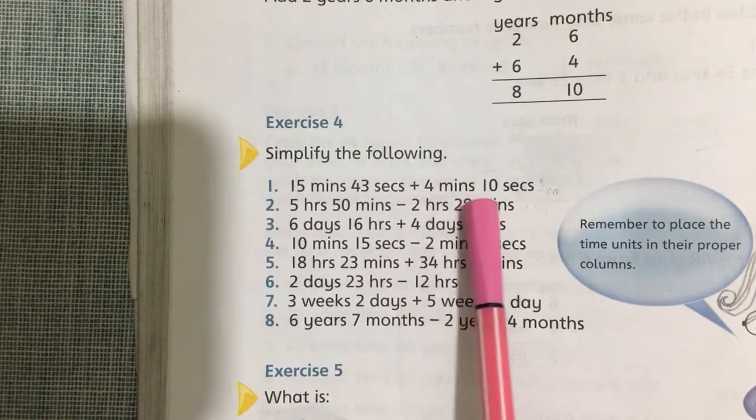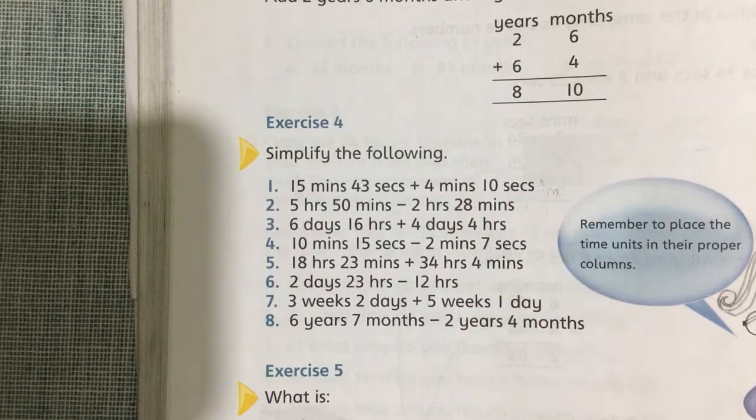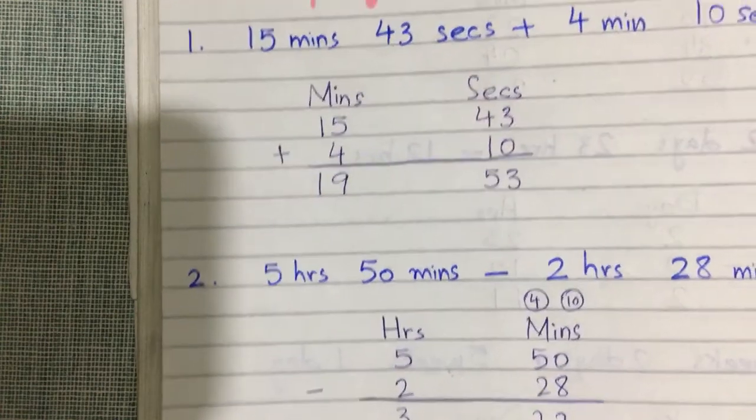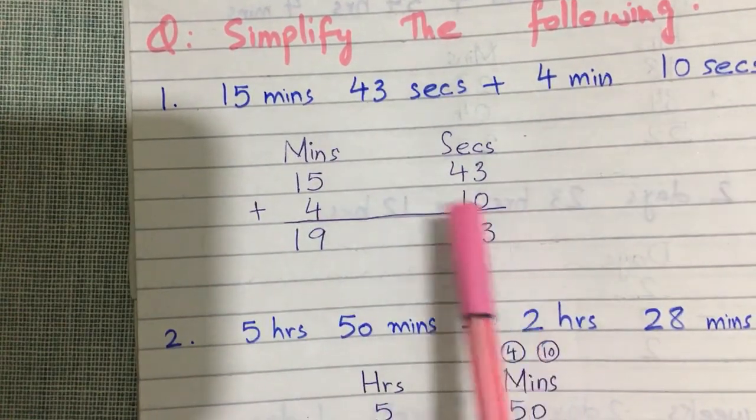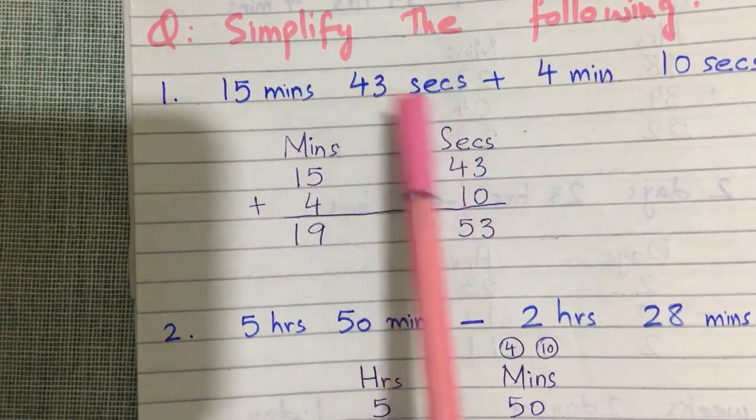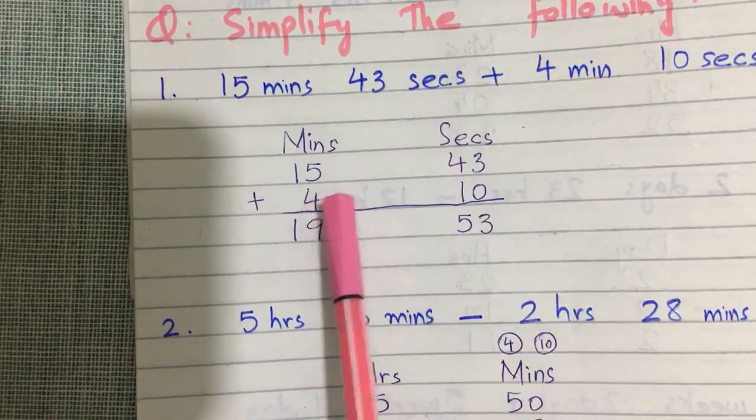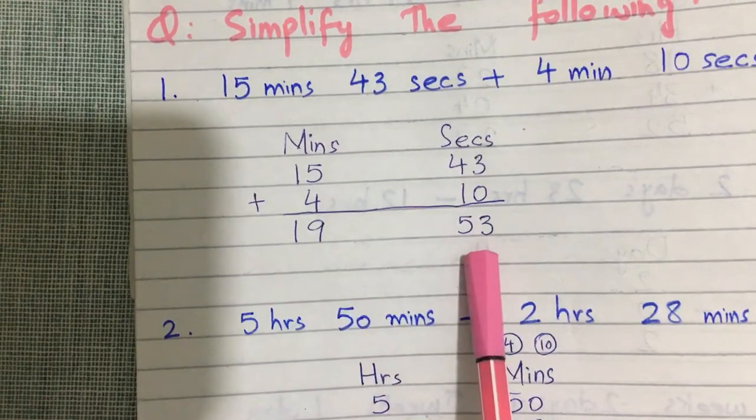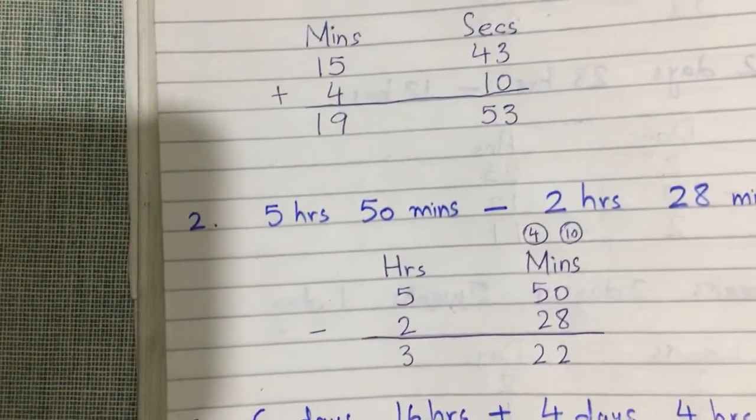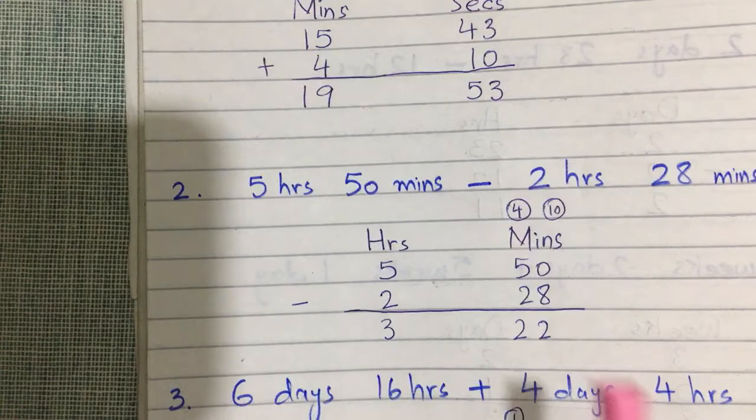Plus 4 minutes and 10 seconds. You have to add minutes with minutes and seconds with seconds. 15 minutes and 43 seconds, then 4 minutes and 10 seconds. So answer is 19 minutes and 53 seconds.